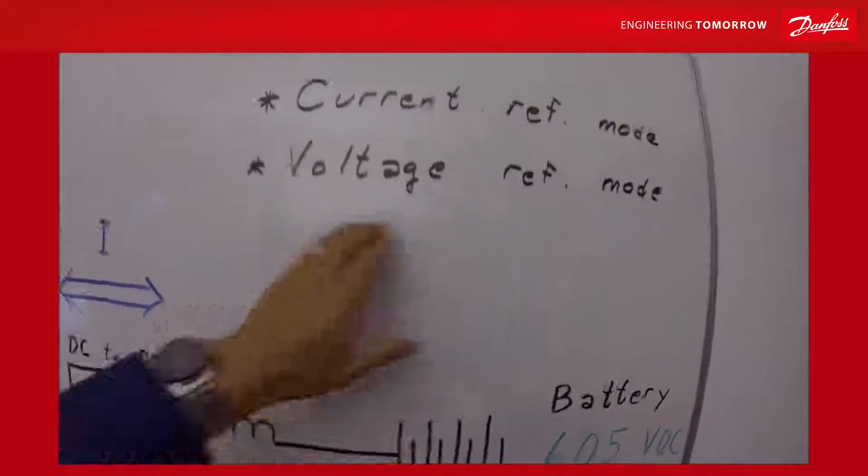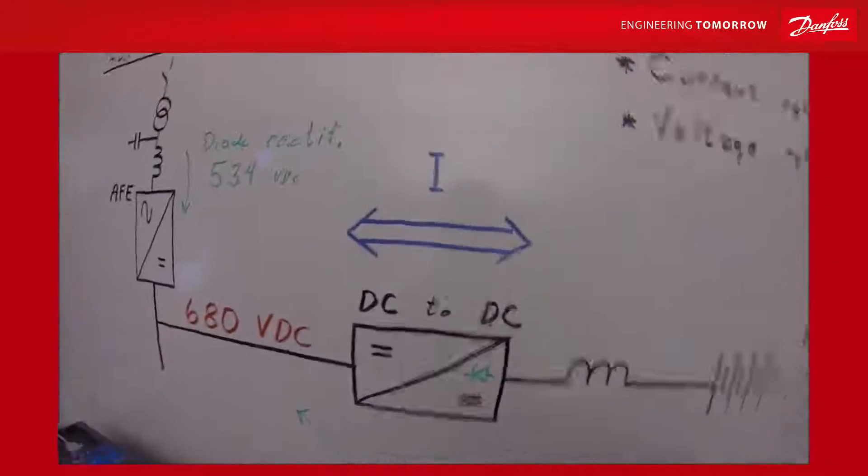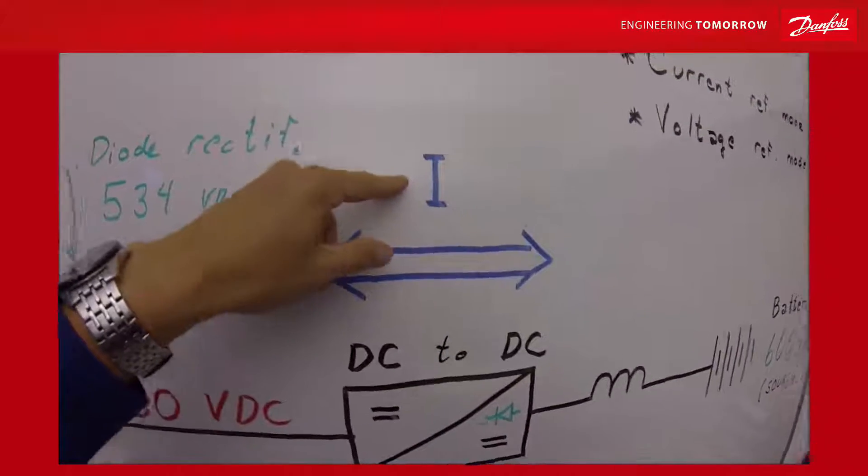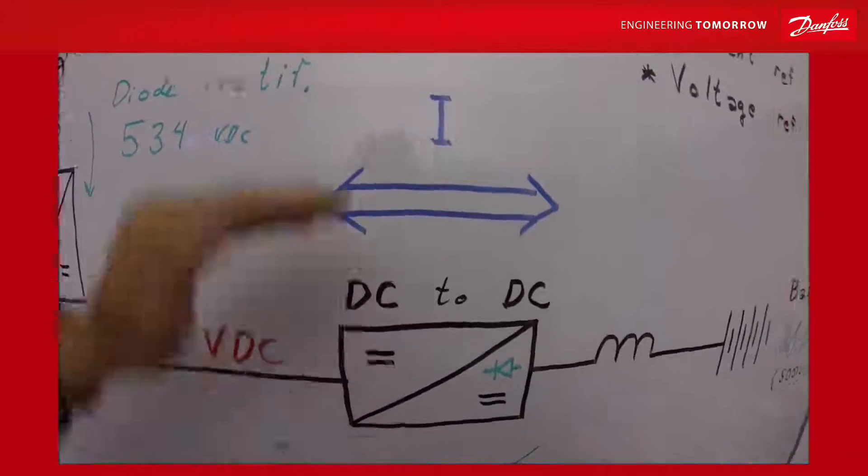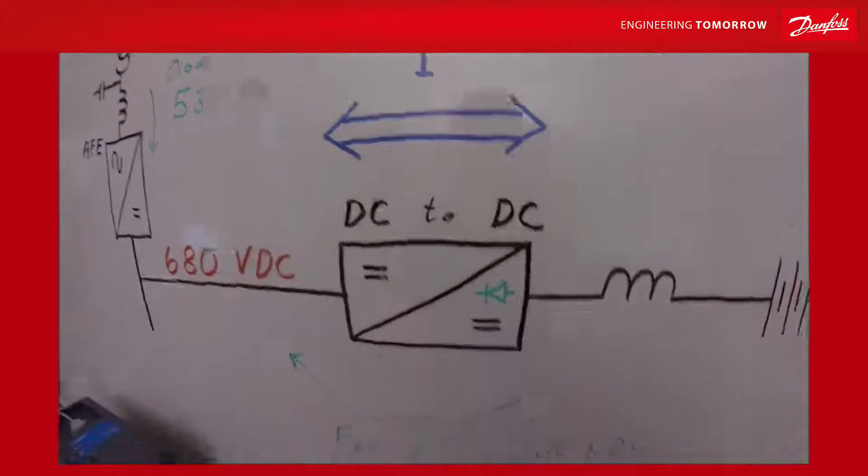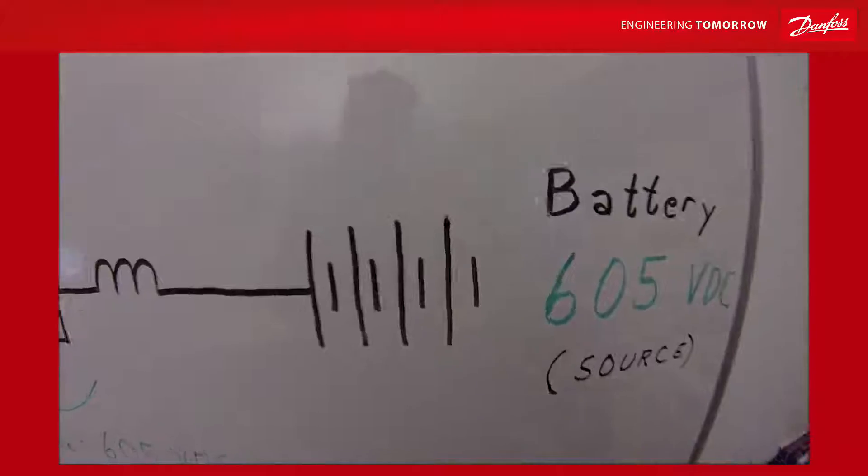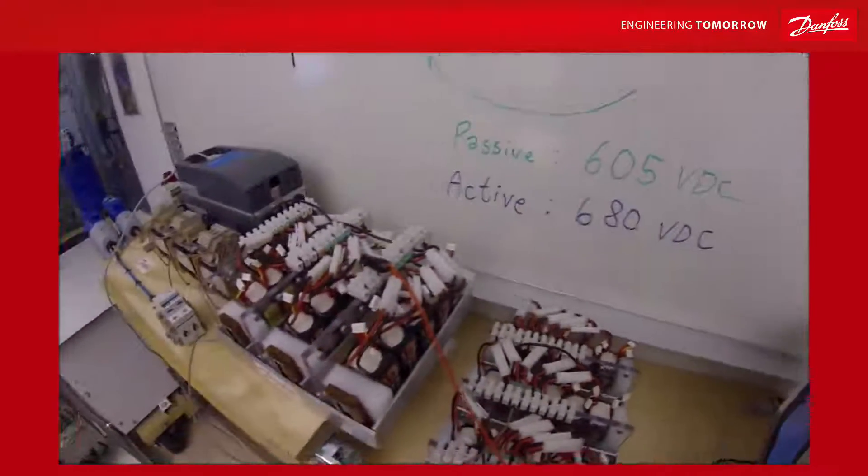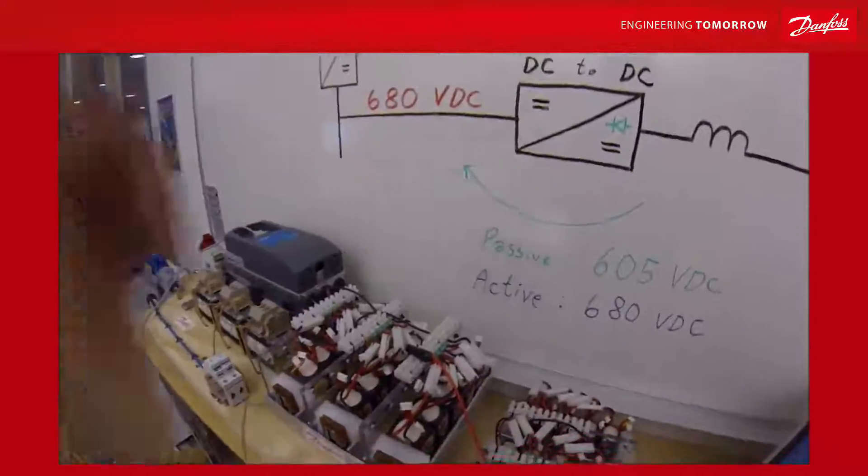When you are running the voltage reference mode, it could be a good idea to have current limits on how maximum charge and discharge currents will be allowed. Because if you have a battery with quite low impedance, then the current could be quite abrupt big.